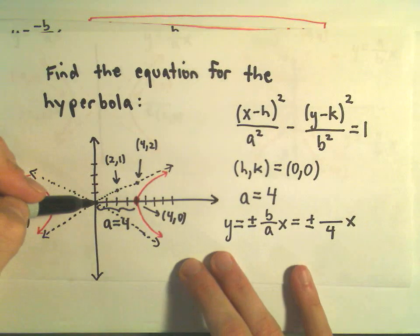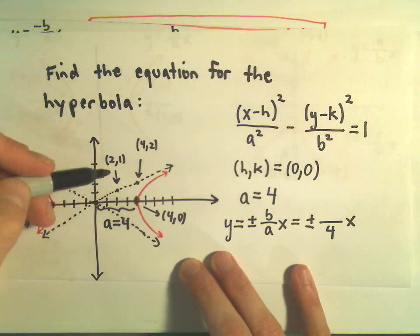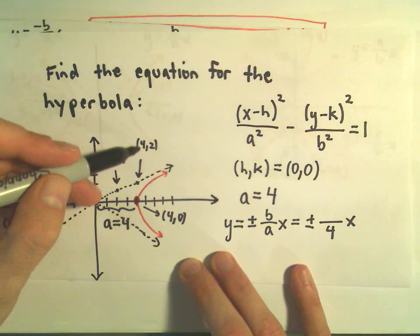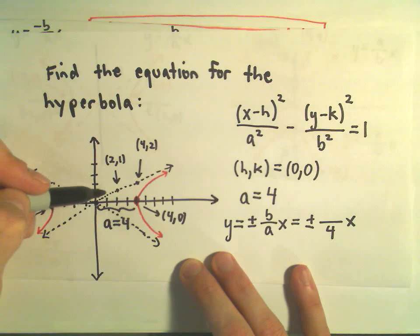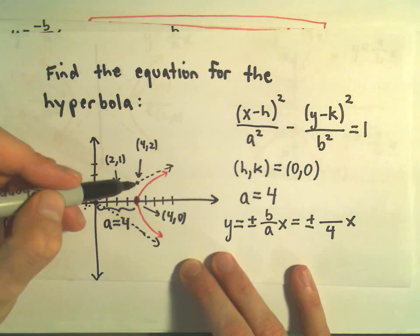We just need to figure out our b value. Well, notice in this, our asymptote goes through the points 2, 1 and 4, 2. Okay, so you go up 1 over 2, up 1 over 2.